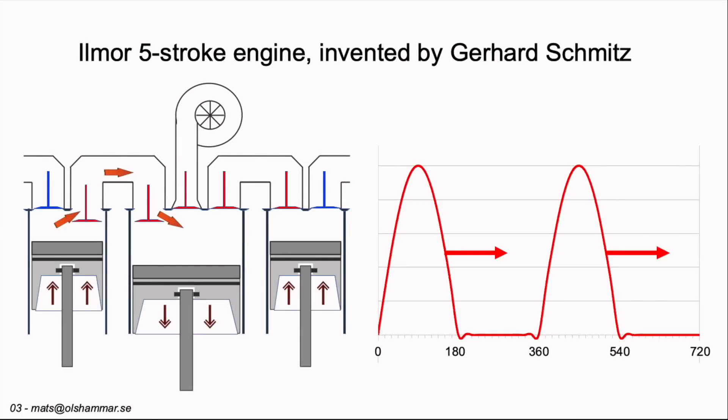The Ilmor 5-stroke engine was invented 20 years ago by Gerard Schmitz and it uses one large exhaust piston that will take care of the exhaust gases from first one combustion cylinder and then from a second combustion cylinder and it will have a second expansion of these gases and then the valve will open towards the turbo.